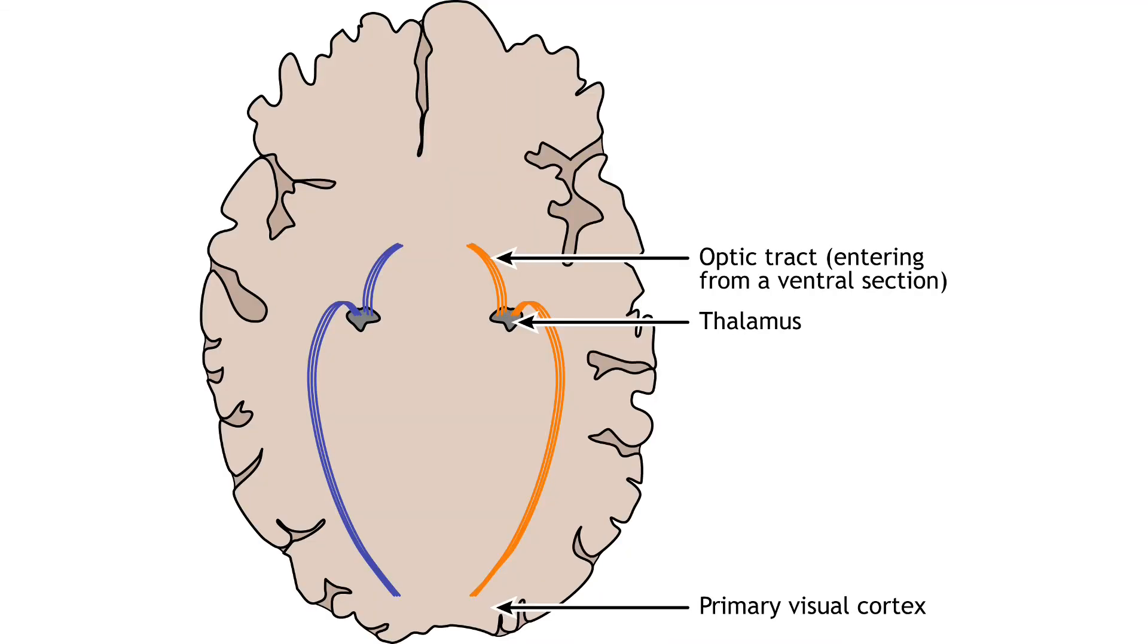The optic tract enters the brain and ascends to synapse in the lateral geniculate nucleus of the thalamus. From there, axons project to the primary visual cortex, also called the striate cortex, or V1, located in the occipital lobe.